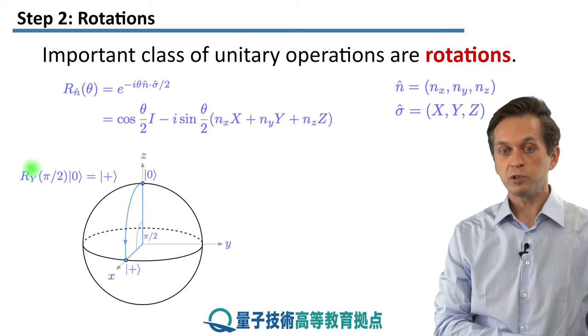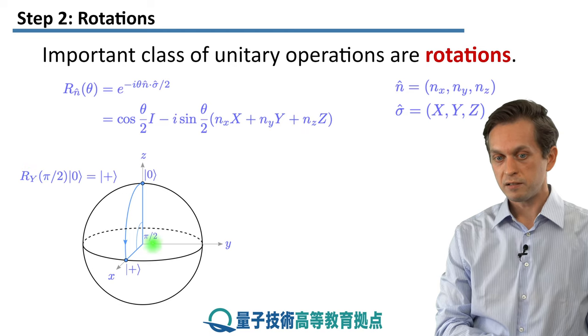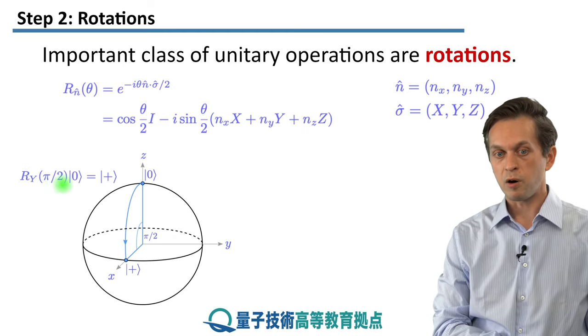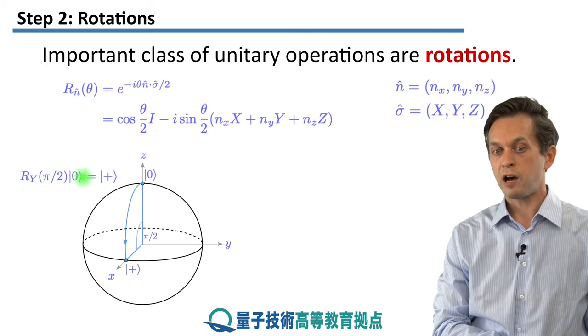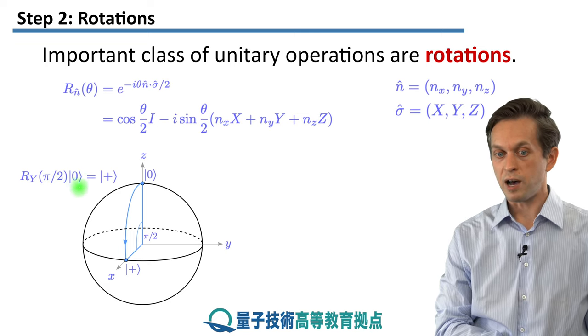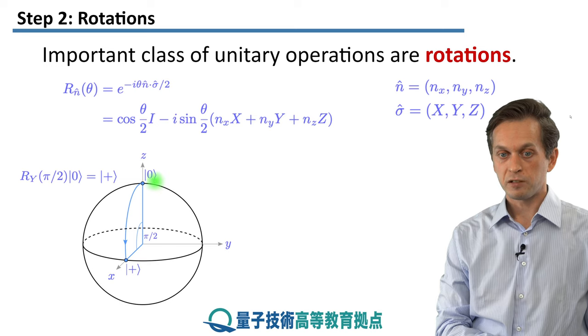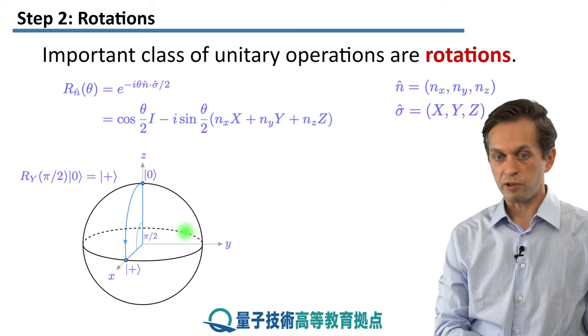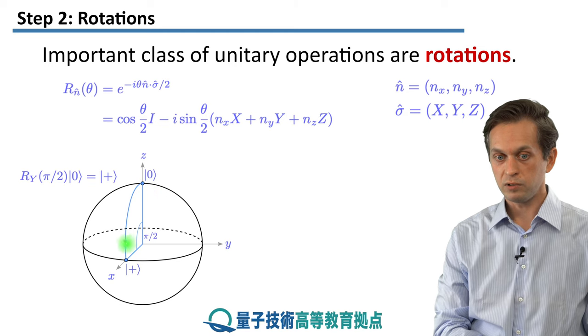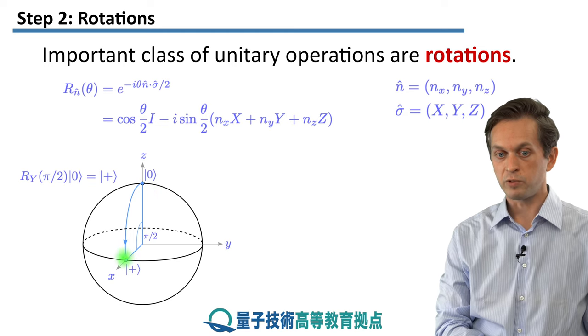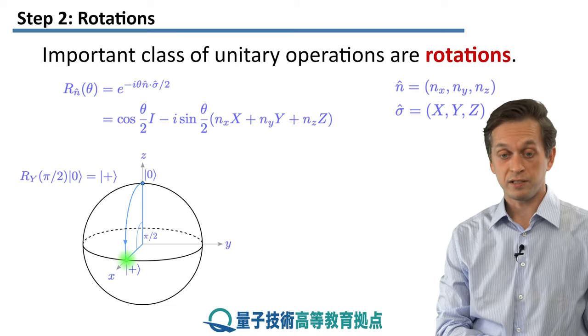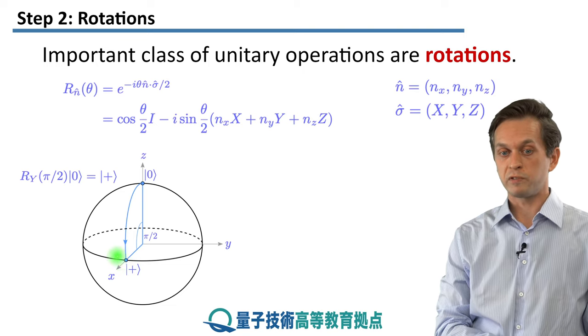Let's consider an example. We want to rotate around the y-axis, given by this horizontal axis here, through an angle of π/2, and our initial state is given by 0. So let's start at the point 0, and we just rotate around the y-axis. So we are going down on the surface by angle π/2. And you see that we reach the state ψ, sorry, state +, which is equal superposition of 0 and 1.